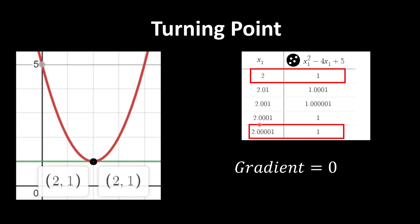Whenever we have a turning point, it's like a car — it becomes horizontal, and the gradient is 0. In other words, we can say that dy/dx = 0, because a flat line has a gradient of 0.